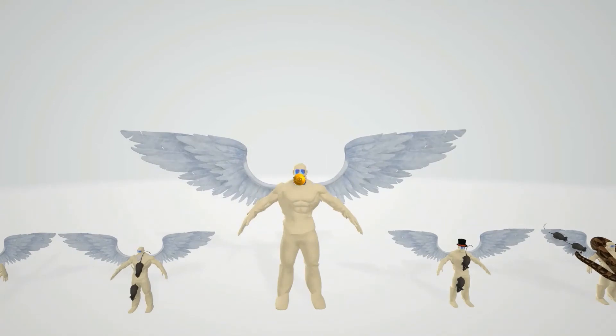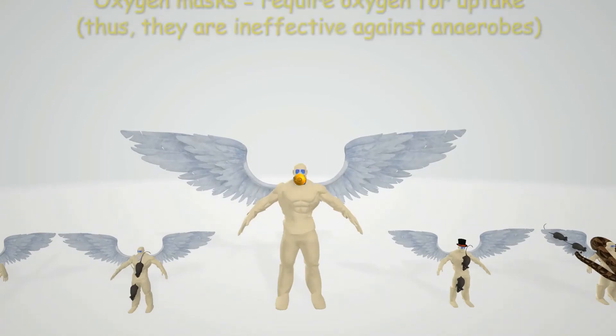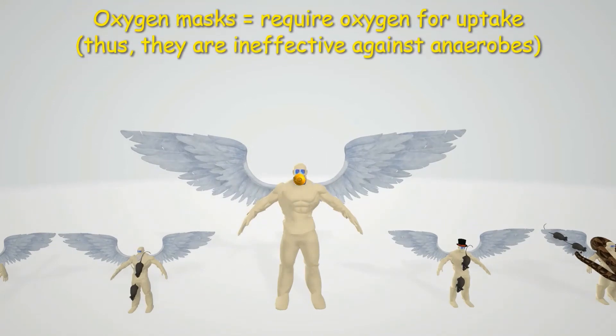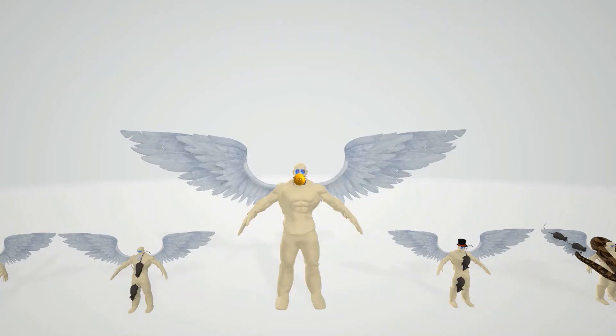He likes his oxygen mask — this helps us remember that aminoglycosides require oxygen for uptake into the bacterial cell. That is why aminoglycosides are ineffective against anaerobes, which do not require oxygen.